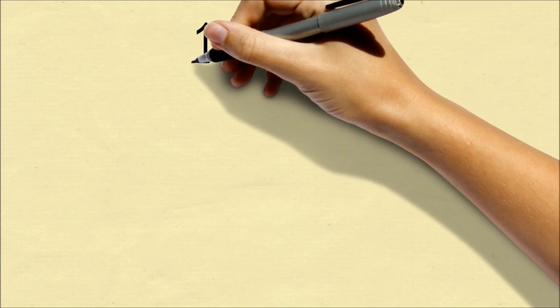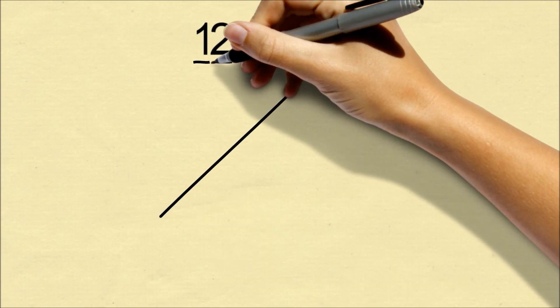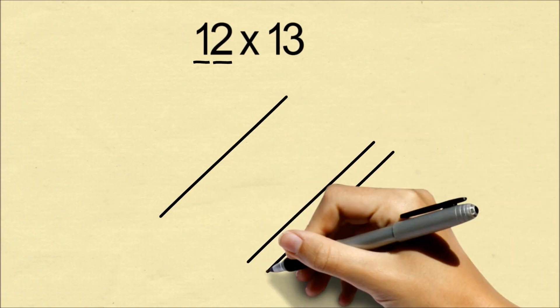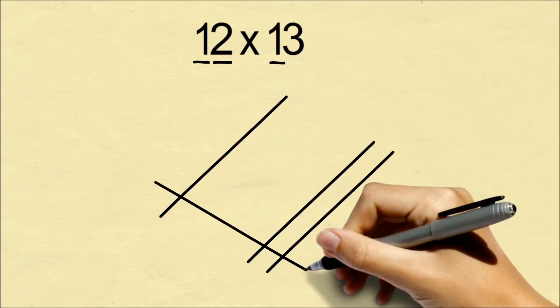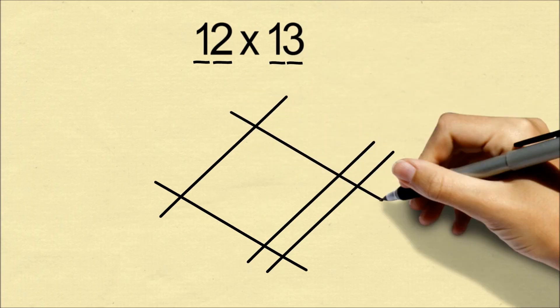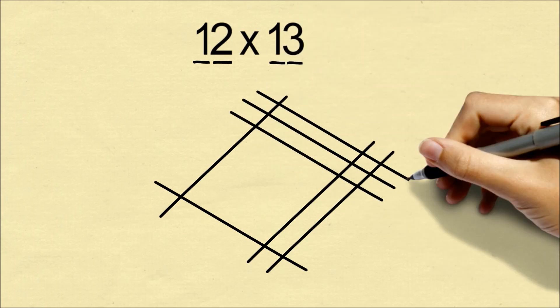Let's say you want to multiply 12 by 13. For the one, we'll draw one line, and then for the two, we'll leave some space and draw two lines. For the other number, we'll draw lines in the opposite direction.